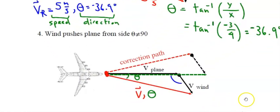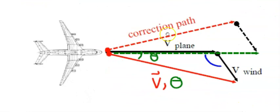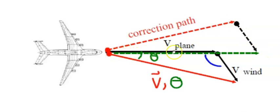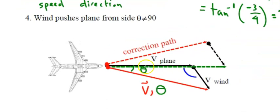But what if the airplane must travel east and does not want to be blown off course? Then it has to take a correction path. The correction path forces the pilot to fly 36.9 degrees against the deviation of the angle — flying into the wind by the same number of degrees that the wind is pushing it off course. By flying into the wind and getting pushed off course, it actually remains along the intended eastward direction. That's called a correction path.